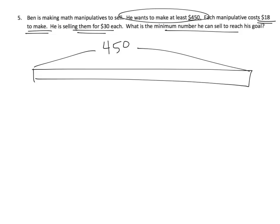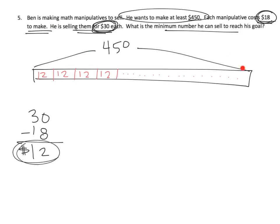But he's not selling, I mean, he's not earning $30 each. Because really, they cost $18. So 30 minus 18 is $12. So he's really making $12 a piece. So the idea is, how many 12s will go into $450? So that's my, right here is my tape diagram. And the division problem would be $450 divided by 12.